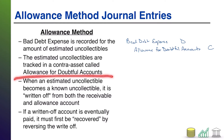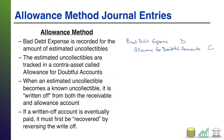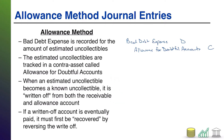Next up: when an estimated uncollectible becomes a known uncollectible. At this point, we've only estimated that we're not going to get paid. But at some point, we're going to know for sure. In the instance where we find out for sure that we are not going to receive a portion of a receivable, we do what's known as a write-off.